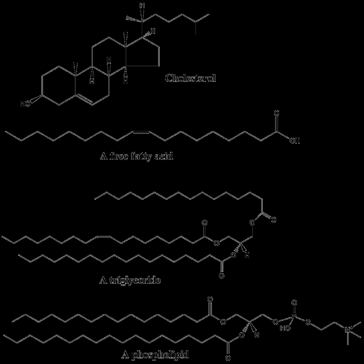Triglycerides, stored in adipose tissue, are a major form of energy storage both in animals and plants. They are a major source of energy because triglyceride carbons are all bonded to hydrogens, unlike in carbohydrates; in comparison to glycogen, which would contribute only half of the energy per its pure mass. The adipocyte, or fat cell, is designed for continuous synthesis and breakdown of triglycerides, with breakdown controlled mainly by the activation of hormone-sensitive enzyme lipase. The complete oxidation of fatty acids provides about 38 kilojoules per gram (9 kilocalories per gram), compared with 17 kilojoules per gram (4 kilocalories per gram) for the breakdown of carbohydrates and proteins.